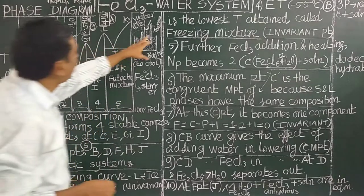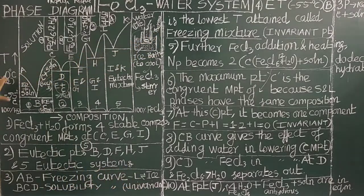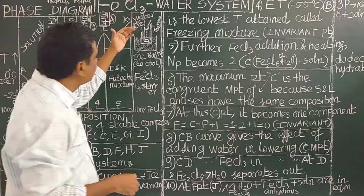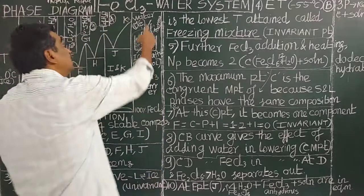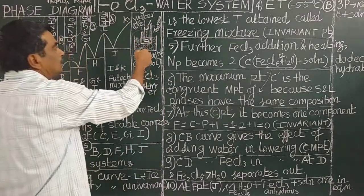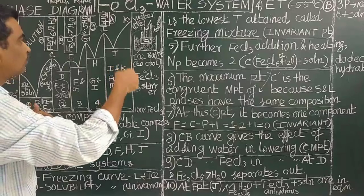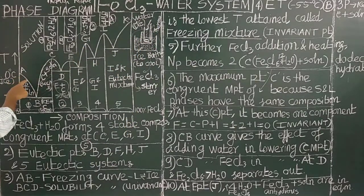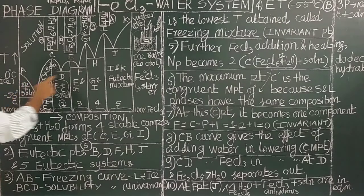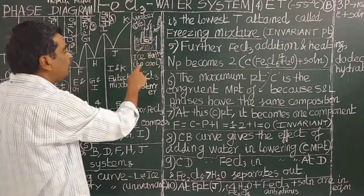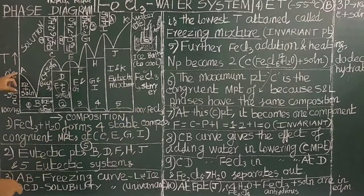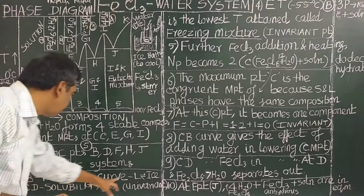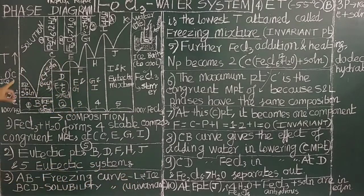The freezing point of pure water is 0°C. Now let us add ferric chloride to it — for example, 0.1 gram of ferric chloride — and measure the freezing point. The freezing point decreases on further addition of ferric chloride. Therefore, this AB curve is called the depression of freezing point curve, or simply the freezing curve.